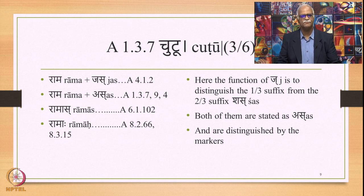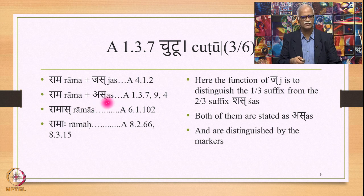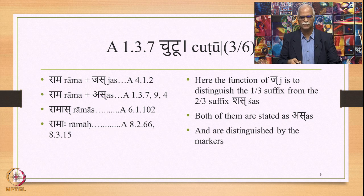The question is: what is the purpose of J becoming Ith? The function of J is to distinguish the 1/3 suffix from the 2/3 suffix which is stated as 'Shas'. Both of them, after removing the marker, have the common form 'As'. So, how do you distinguish between As in the position of 1/3 and As in the position of 2/3? J serves this function. Both of them are stated as As and are distinguished by the respective markers J and Sh.